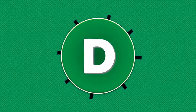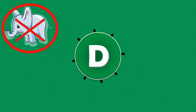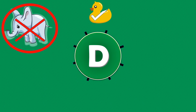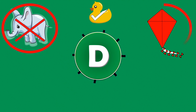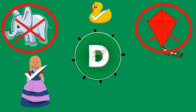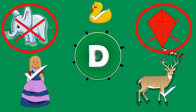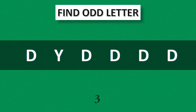D. D for elephant — no, it's wrong. D for duck, correct, yes. D for kite — no, it's wrong. D for doll, correct, yes. D for deer, correct, yes. D for dustbin, yes. Find odd letter.